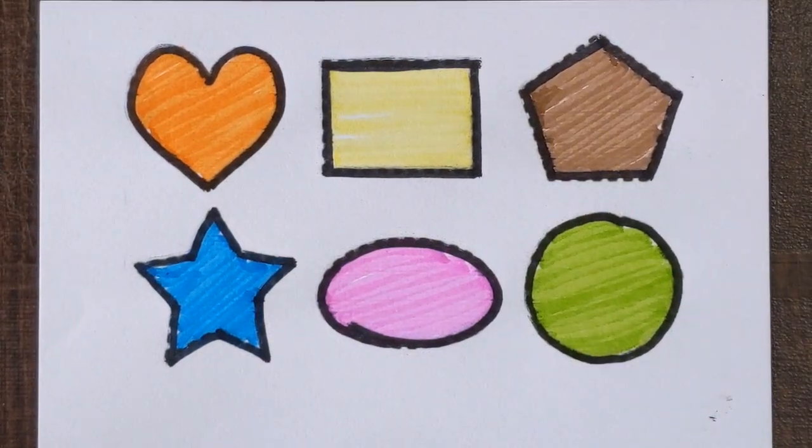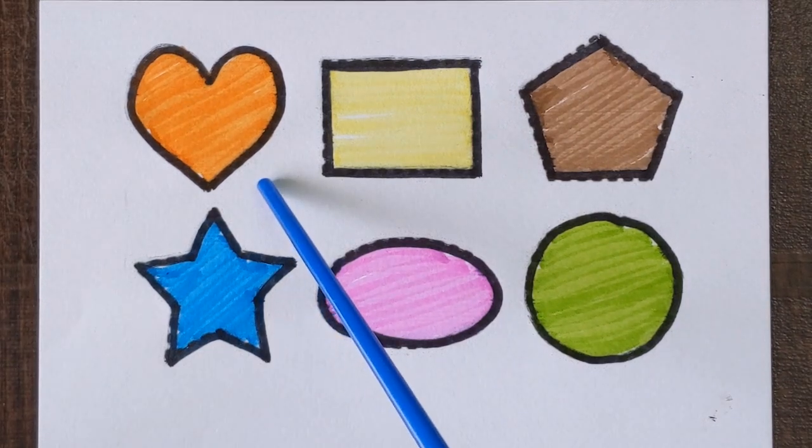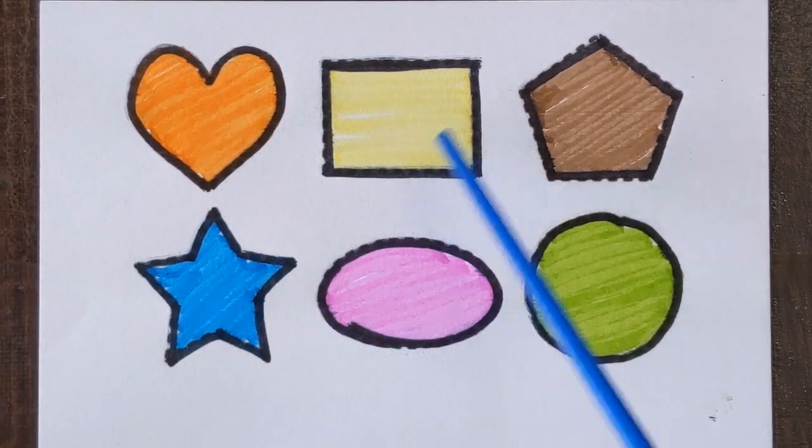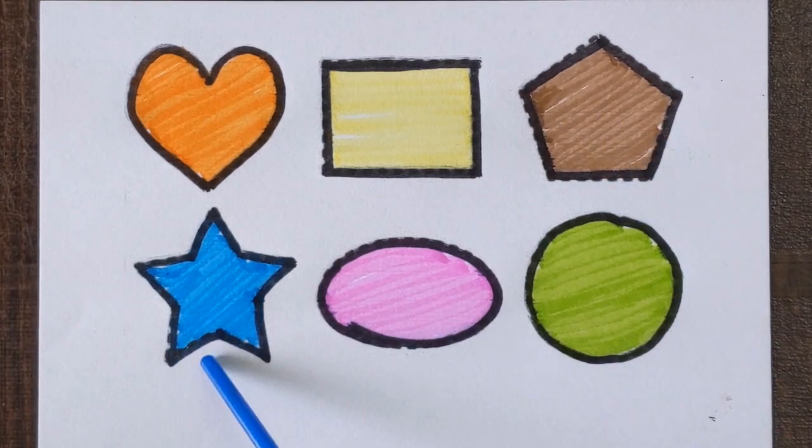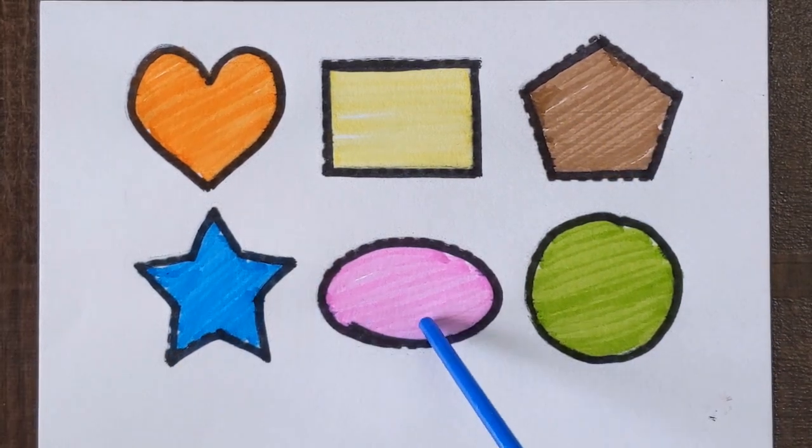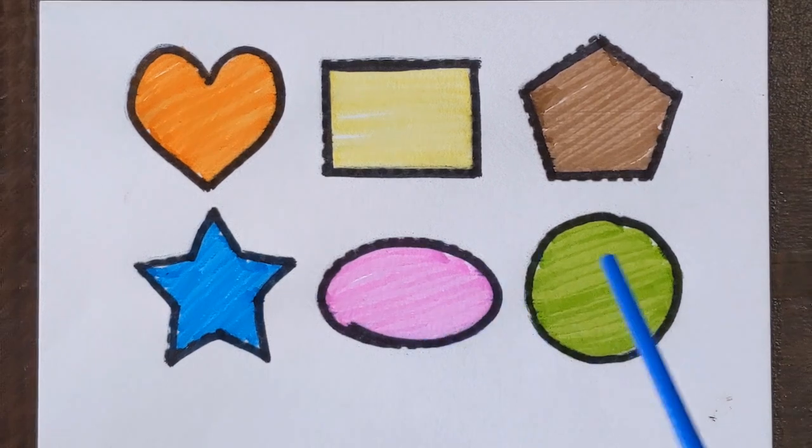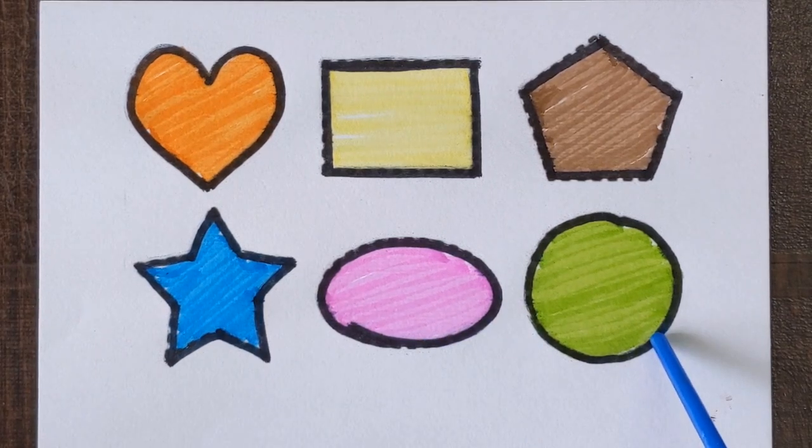Let's revise with me. Heart shape, orange color. Rectangle, yellow color. Pentagon, brown color. This is star, sky blue color. Oval with a purple color. And circle with a light green color.